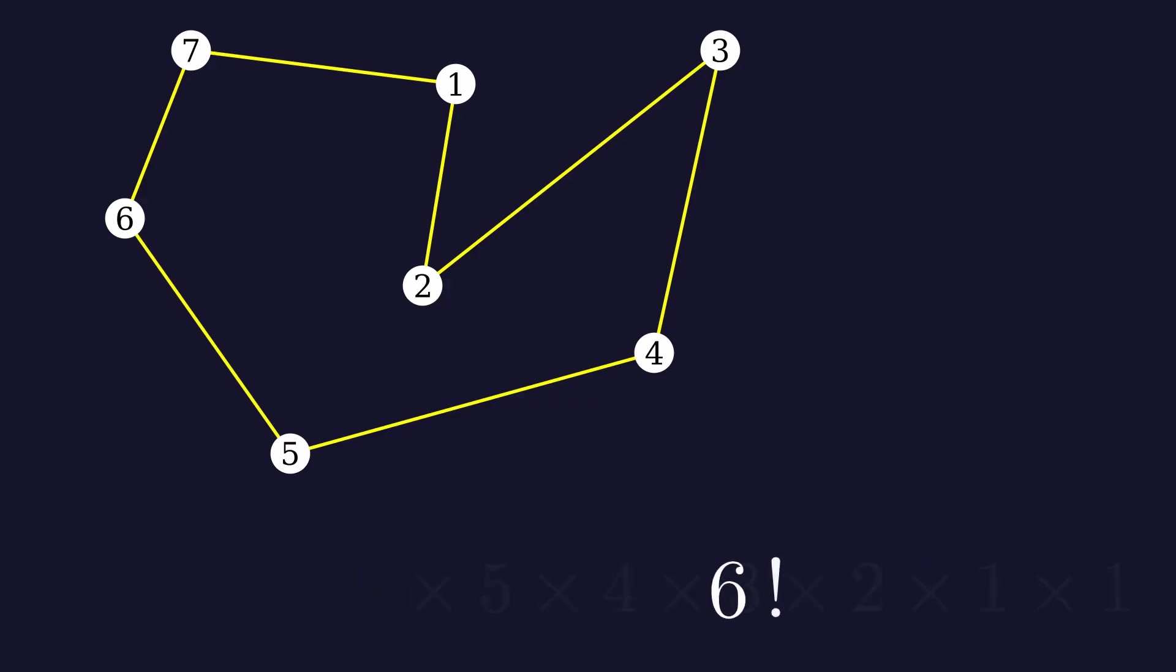We can write it as 6 factorial, but the direction of the path doesn't matter because the path from city A to B is the same as the path from city B to A. So if we reverse a path, it is still the same path, so we have to divide the total number of paths by two. For seven cities, there are 360 possible paths. A computer can easily calculate all 360 paths.